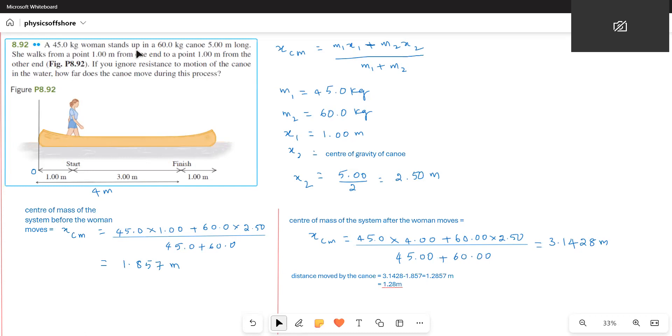A 45 kg woman stands up in a 60 kg canoe, 5 m long. She walks from 0.1 m from one end to 0.1 m from the other end. If you ignore resistance to motion of the canoe in the water, how far does the canoe move during this process?